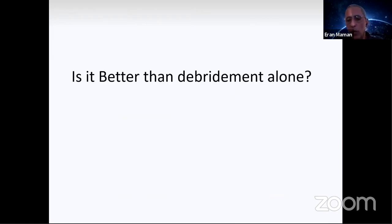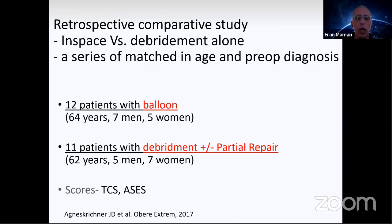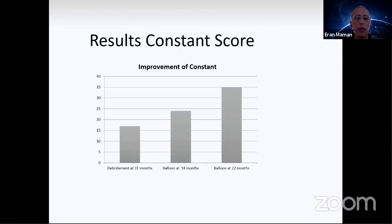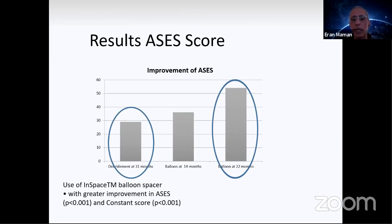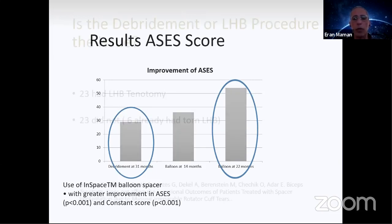One of the questions was, is it better than debridement alone? Krishnan did this study, 12 patients with balloon, 11 with debridement and partial repair, published in 2017. Look at the result - on the left, the debridement-only patients improved by 15 or 16 points in constant score. If you look at the balloon at 14 months and 22 months, they improved nearly 25 or 35 points in constant score. If we compare it only to debridement, the balloon group was better. The same goes for ASES scores - the balloon was much better.